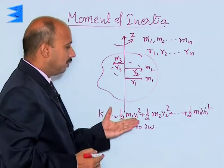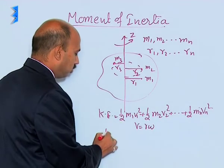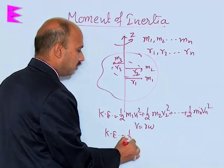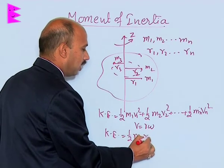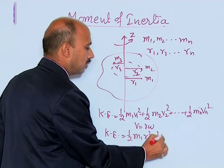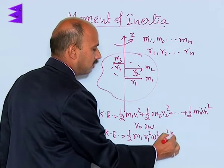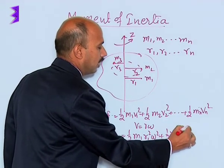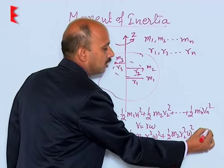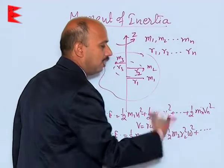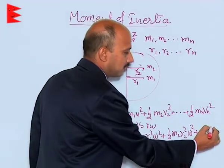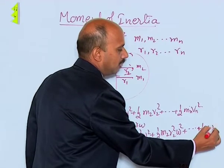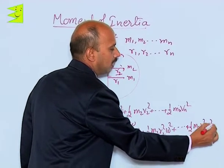So for every particle we can replace v with r·omega. You will get kinetic energy equals half m1 r1 squared omega squared, plus half m2 r2 squared omega squared, up to half mn rn squared omega squared.